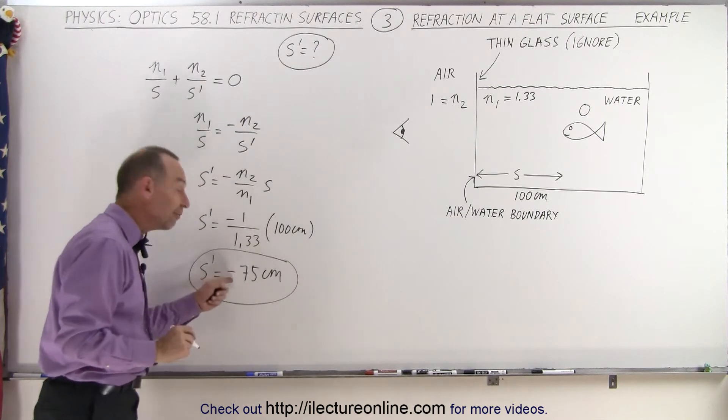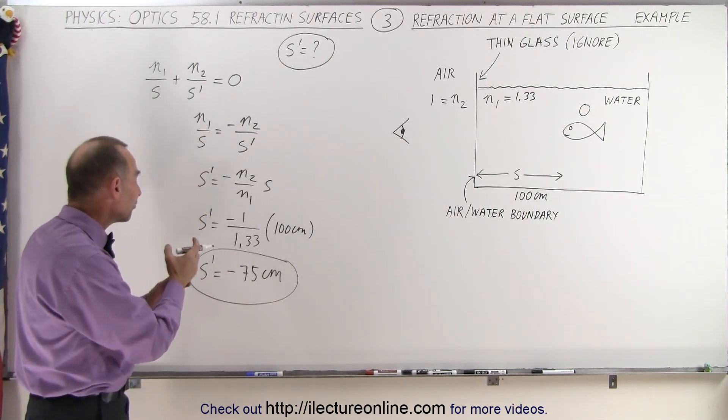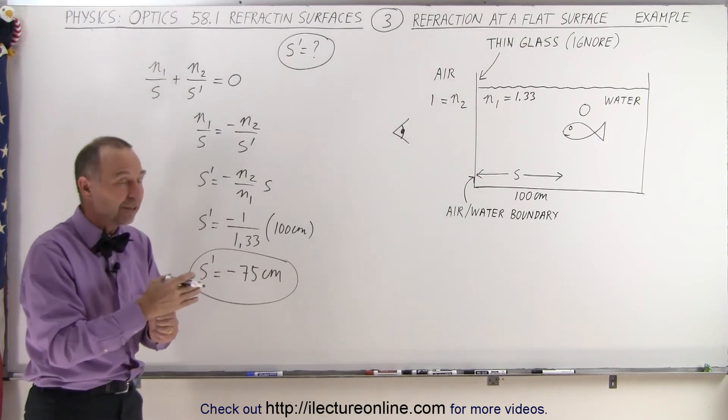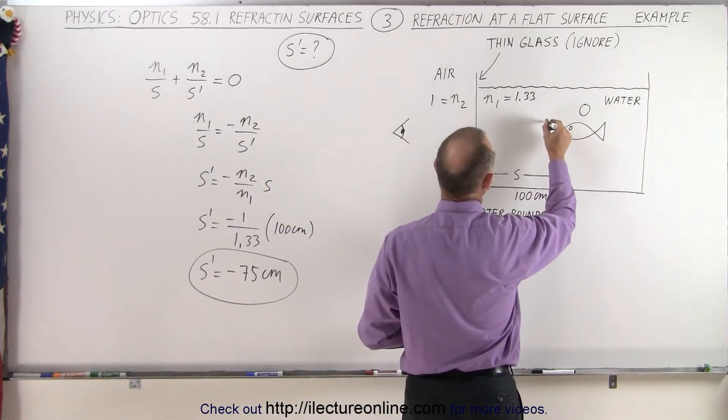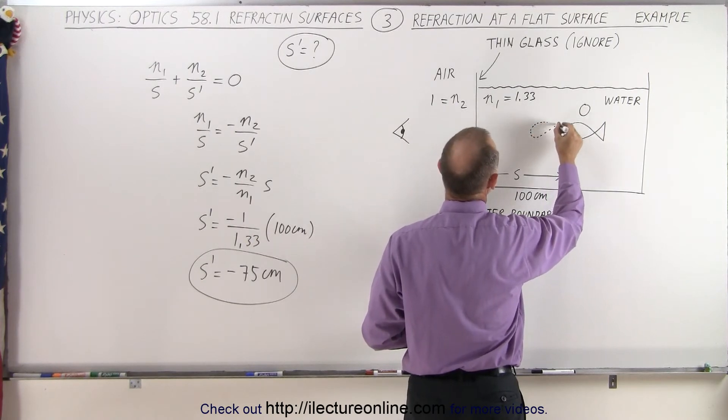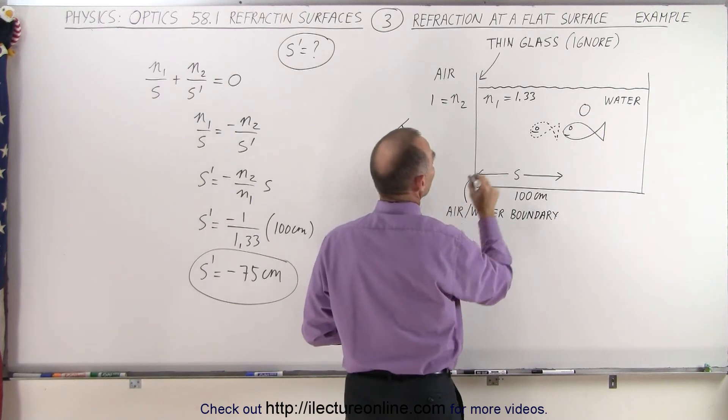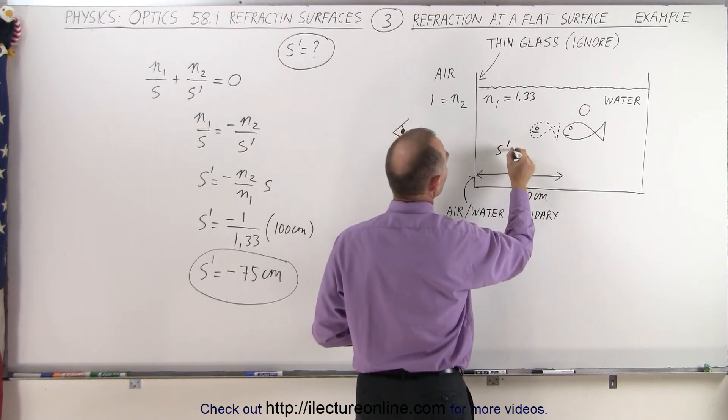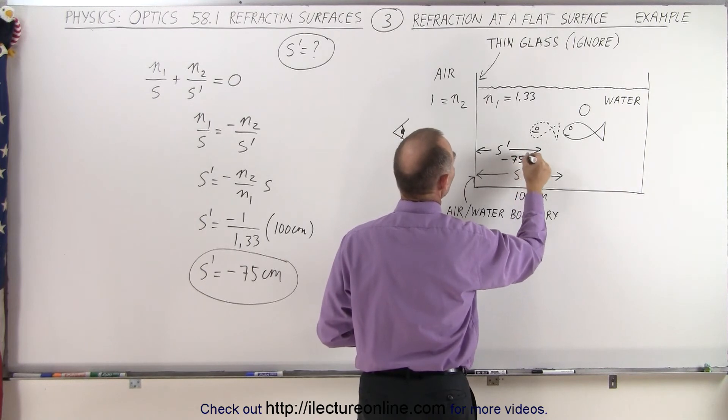A negative means that it's a virtual image and it's 75 centimeters away from the boundary. Negative 75 means that it's on the same side as the object, so an image will appear somewhere around here. And that would be S prime in this direction, and we can say that S prime is minus 75 centimeters.